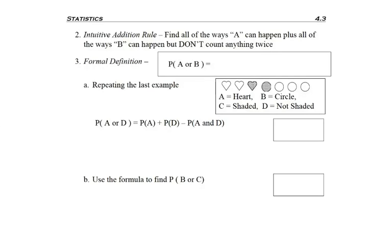So what we just used was the intuitive addition rule because we found all the ways that A could happen plus all of the ways that B could happen. But we didn't count anything twice.